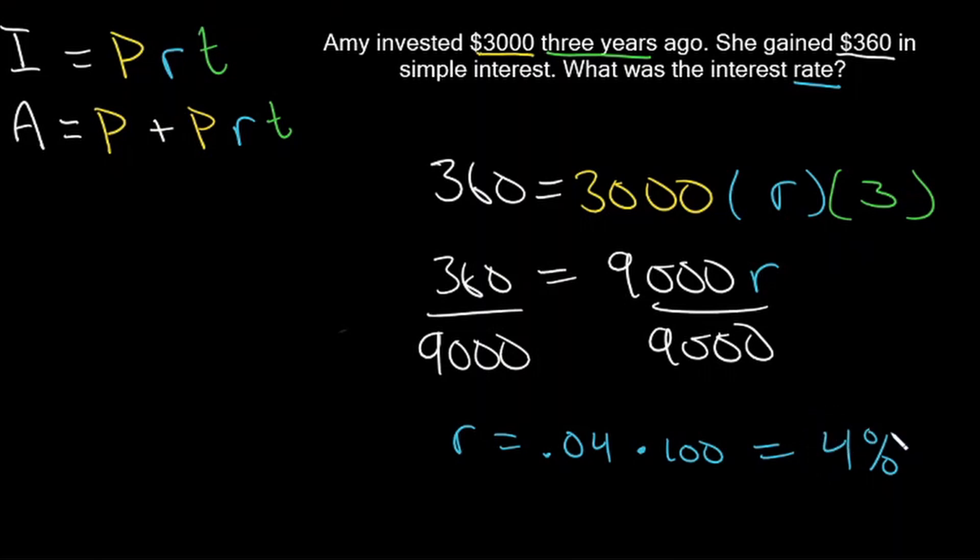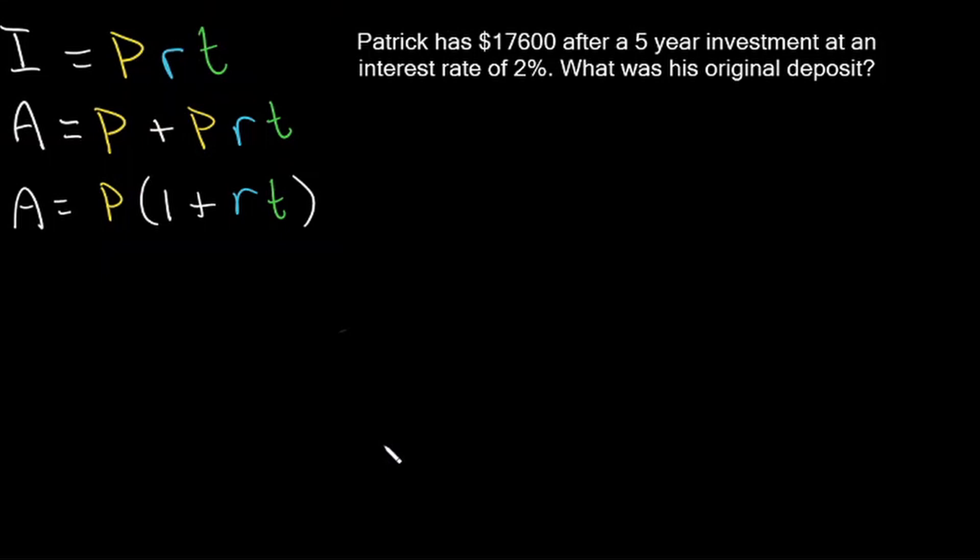Patrick has $17,600 after a five-year investment at an interest rate of 2%. What was his original deposit? We are looking for the original deposit, which is our principal amount, so we're looking for P. We are given 17,600, which is the total amount, so this is A. We are also given time, five years, and our interest rate of 2%. So I'm going to use this third equation here. A equals P times 1 plus r times t.